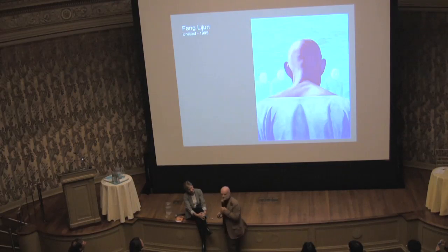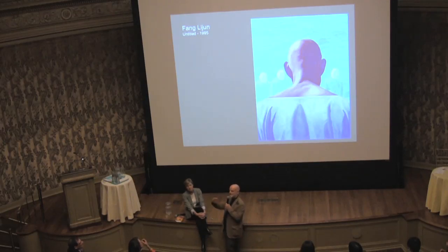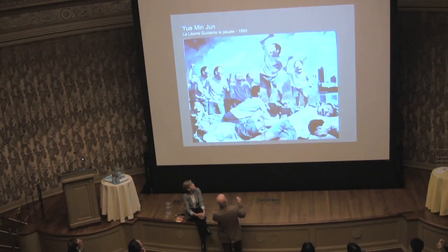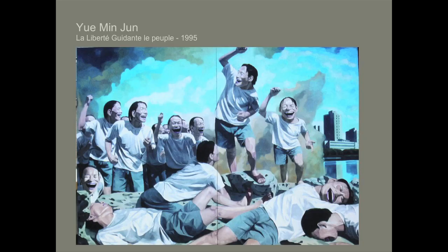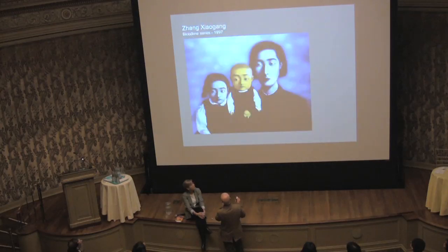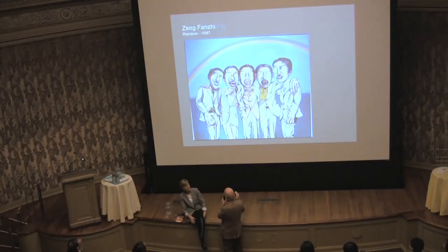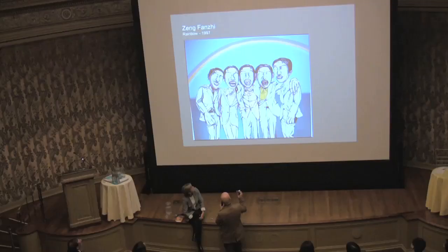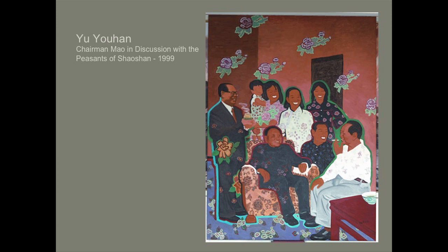This is one example where we see the young Chinese generation, and we see the old China in front of his eyes — they don't communicate. We see another one of what has been considered the important four artists in China: the artists who made the market and who are still among the highly-priced artists. Yue Minxun, Fang Lichun, Zhang Xiaogang — similar type of concept. Zhang Fangzhu. They are all representing this school.